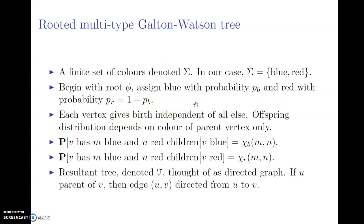Each vertex, just as in the case of Galton-Watson trees, gives birth to offspring independent of everything else. In this case, the offspring distribution will depend only on the color of the parent vertex. For example, when v is a blue vertex, v is going to have m blue children and n red children, according to some bivariate probability distribution chi sub v of m, n. And similarly, conditioning on v being red, its offspring distribution is given by chi sub r.